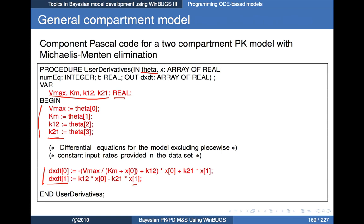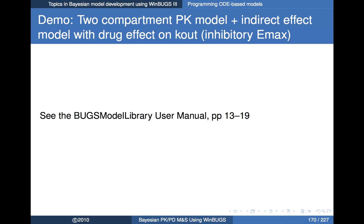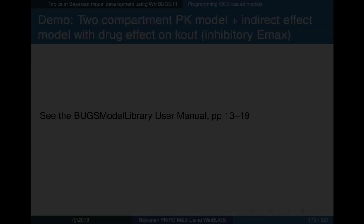Now let's step through the full process for a particular example — the one that comes with the BUGS model library distribution. The example is a two-compartment PK model connected to a PD outcome via an indirect effect model, with a drug effect on the kout component. Let me open up the BUGS model library user manual to walk through it.